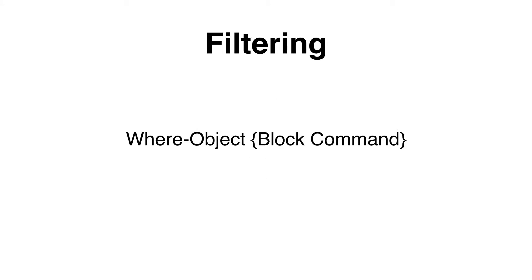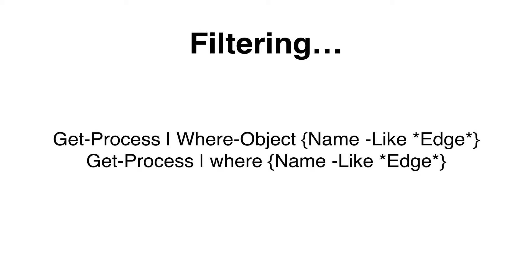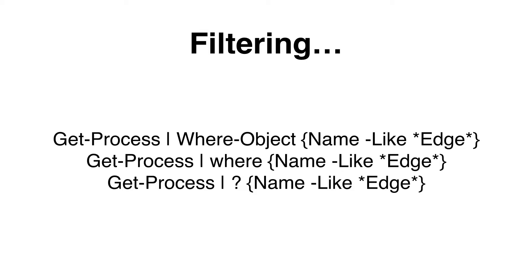We can use the where-object statement to filter data that has been streamed by the pipeline. The aliases we can use for this statement are 'where' or just a question mark. For example, we get a process and pipe it to where-object name like 'edge' with a wildcard. Another way is to just specify 'where' instead of 'where-object', or use the question mark alias — specifying get-process, piping it, then using the question mark followed by name like 'edge'.